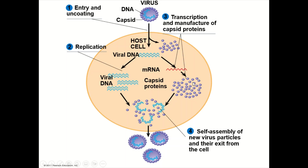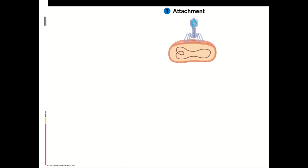Here the assembly of both components takes place. For example, the DNA molecules are surrounded by these capsid proteins to make new virus particles. This is another elaboration of this life cycle.